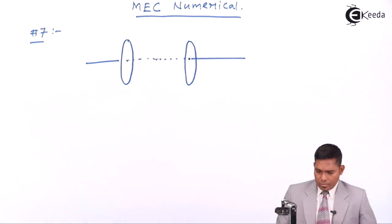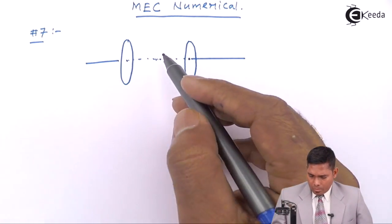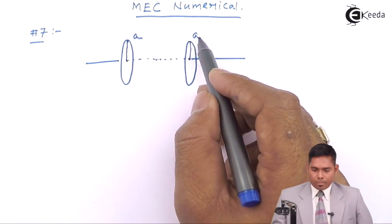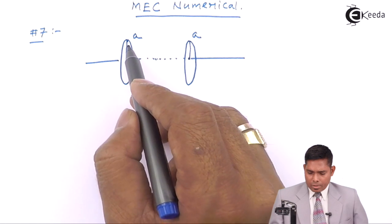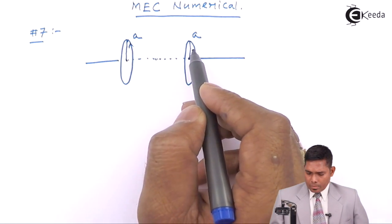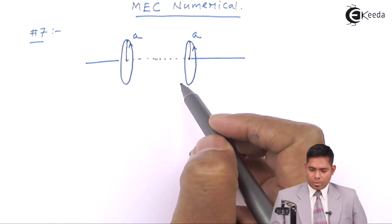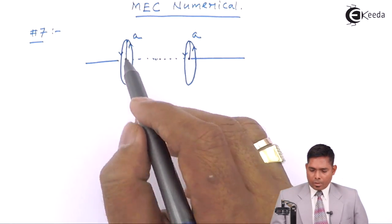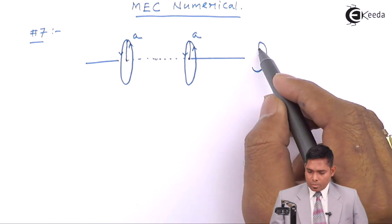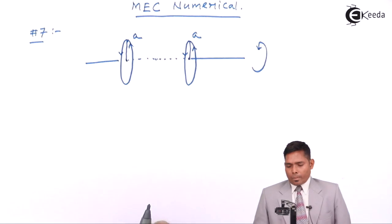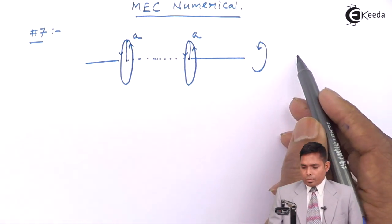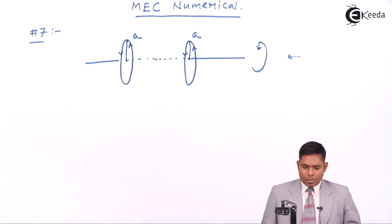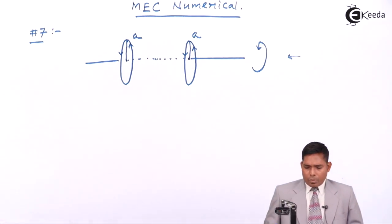The radius is A. The current flows in the same direction — suppose in this direction. Same direction for both coils. Equal number of turns.